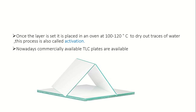We set this layer and activate it at 100 to 120 degrees Celsius for 24 hours. In this activation step, all water vapors are driven off to activate the TLC plate. The resulting TLC plate has a very uniform white layer of silica on glass or aluminum backing.